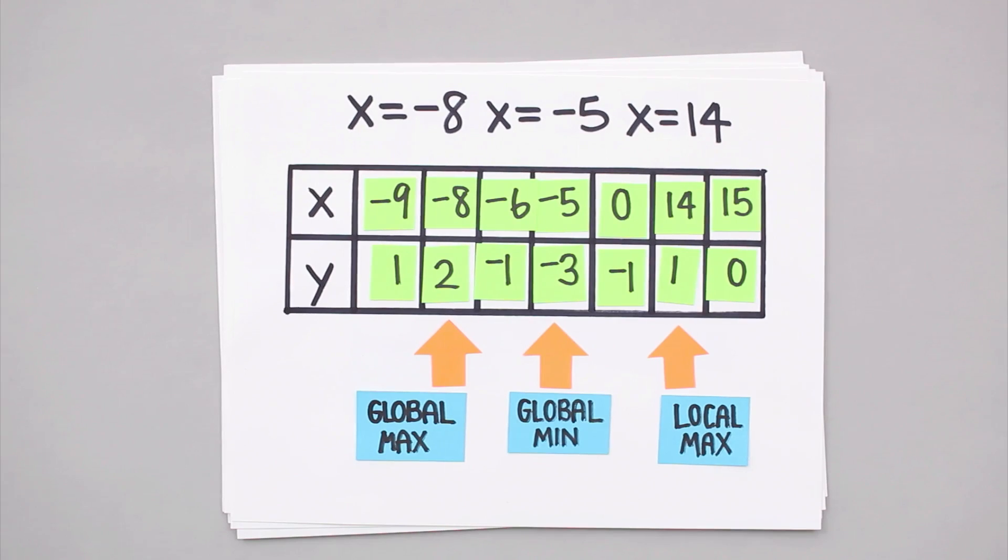So now we know what to do when we need to feed our neighbor's dog, and more importantly, we know how to find local and global extrema using critical points.